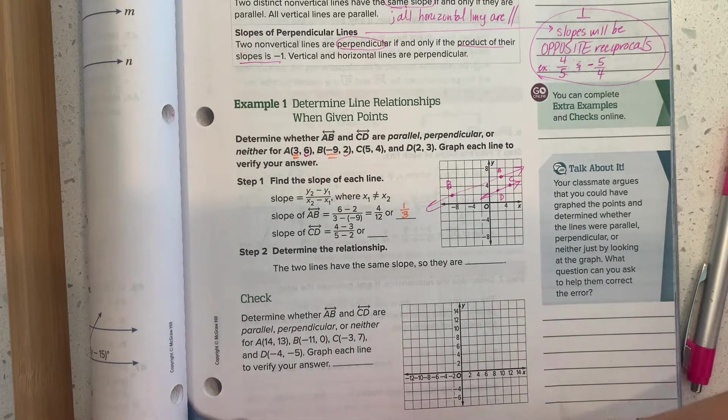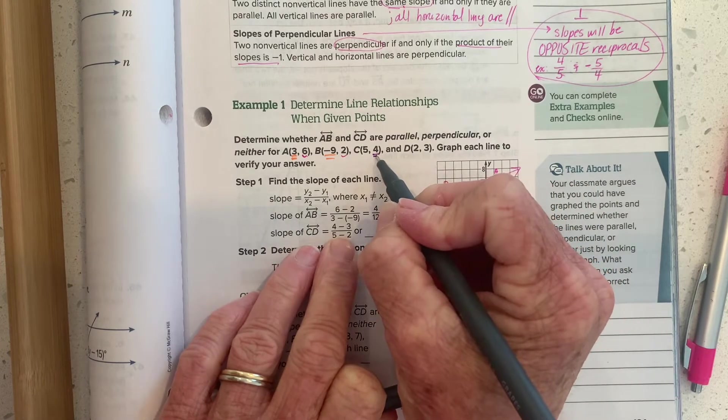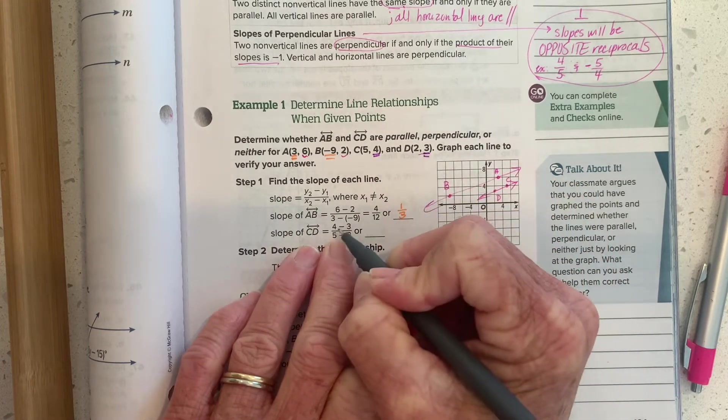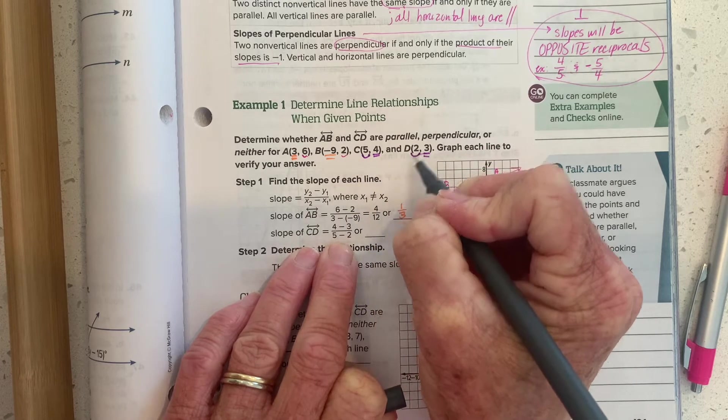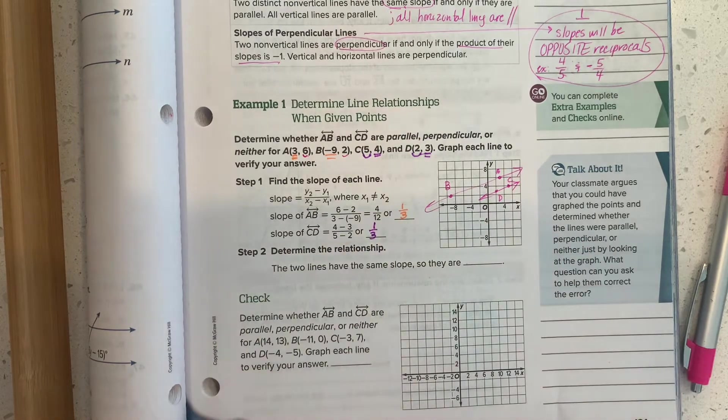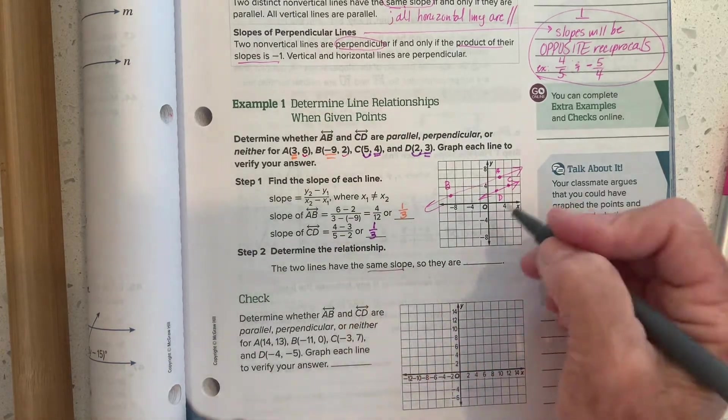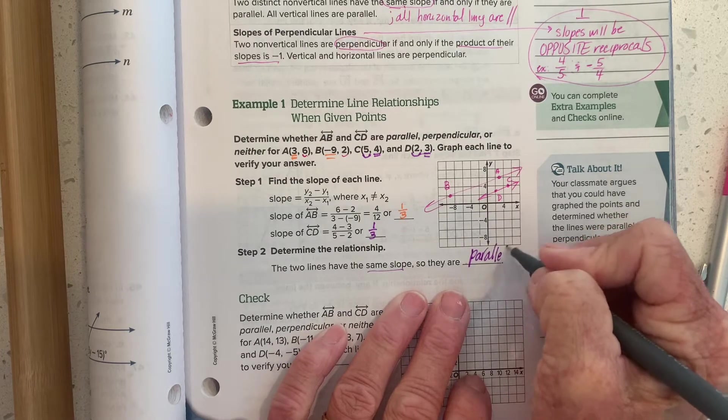And so you end up with four over 12, which reduces down to one third. When we go to do CD, they do this Y minus that Y, four minus three. And then they go back and do X minus X, five minus two. We're going to end up with one over three. So they have the same slope, so they are parallel to each other.